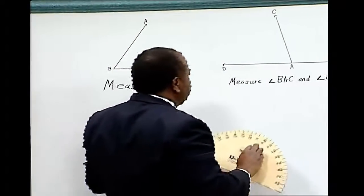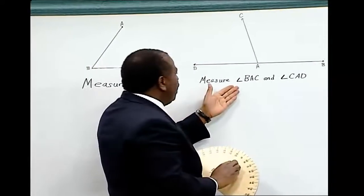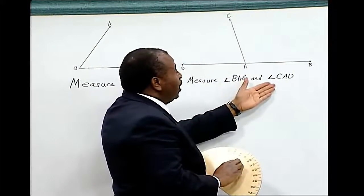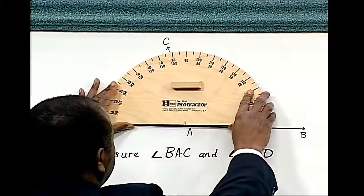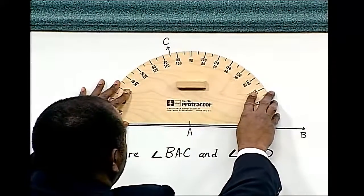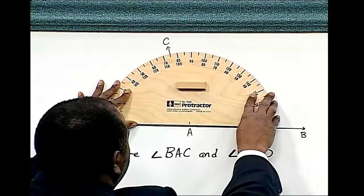Example 2, measure angle BAC and angle CAD. Again, we place the protractor with the center of the protractor at angle A.